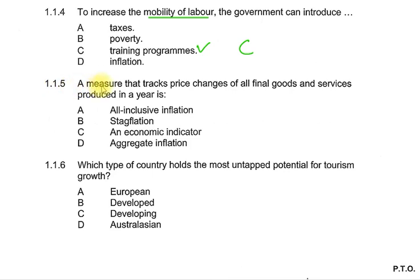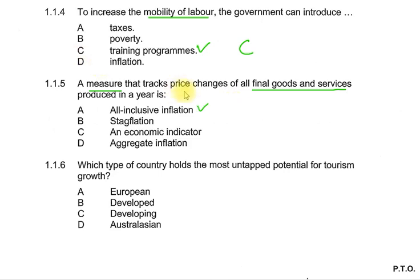Question 1.1.5: A measure that tracks price changes of all final goods and services produced in a year. The keyword is 'a measure that tracks all final goods and services produced.' The correct answer is A — all-inclusive inflation.